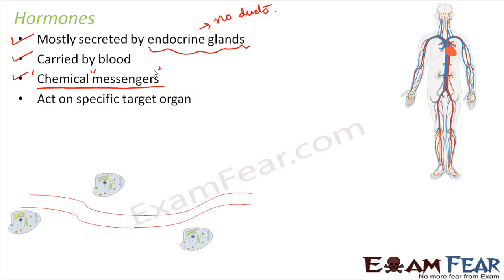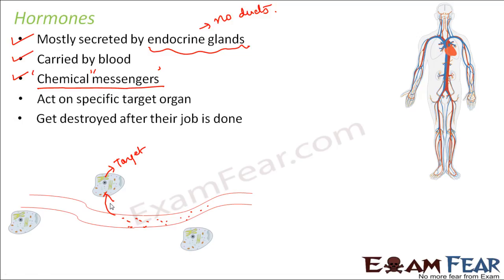Looking at this picture, the red lines show the bloodstream. The hormones released by endocrine glands are present in the bloodstream. Every organ is made up of cells, and the hormone will reach the specific target cell — it doesn't enter just anywhere. Once its job is done, the hormone gets destroyed, because its only job is to carry information from one part to another. Once it has conveyed its information to the target cell, the hormone gets destroyed. It just informs what needs to be done, and then the changes start taking place as per the instruction conveyed by the hormone.